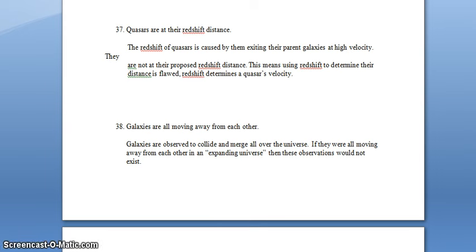Quasars are at their redshift distance. The redshift of quasars is caused by them exiting the parent galaxies at high velocity. They are not at their proposed redshift distance. This means using redshift to determine their distance is flawed. Redshift determines a quasar's velocity.